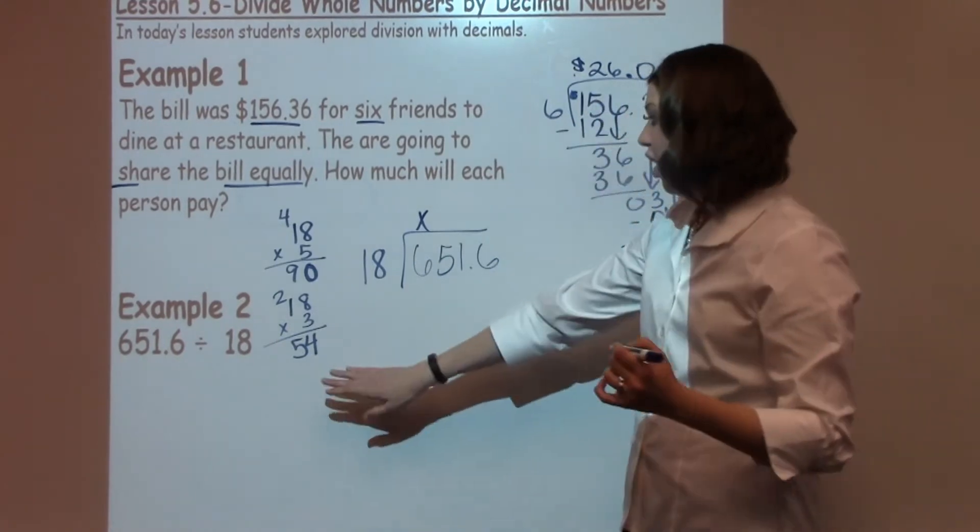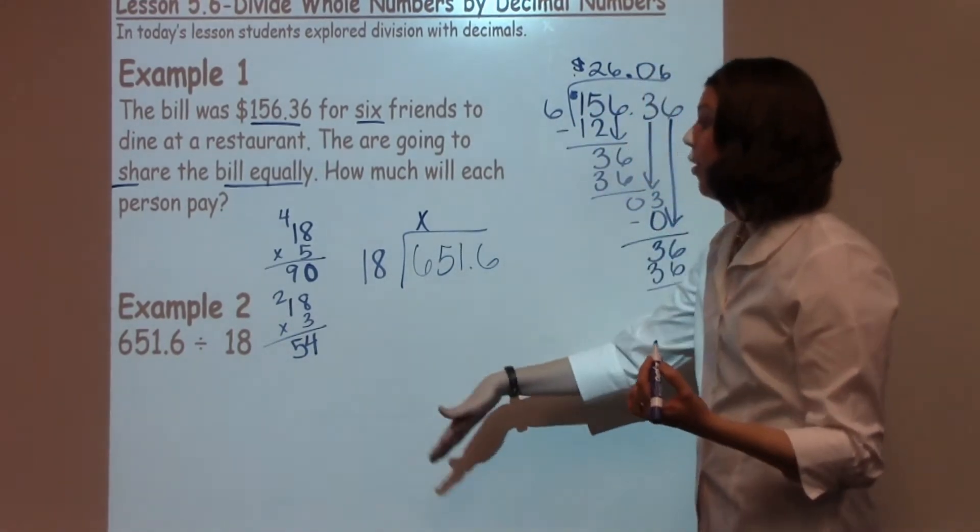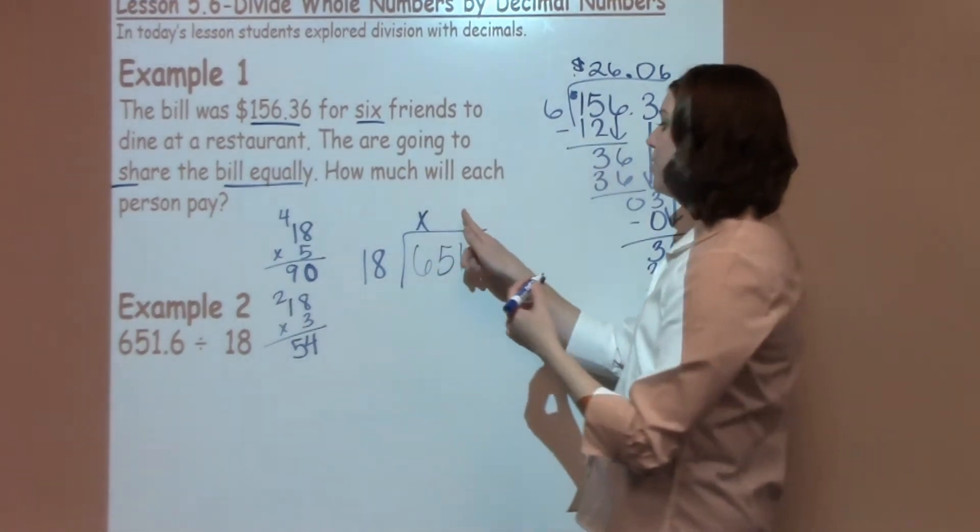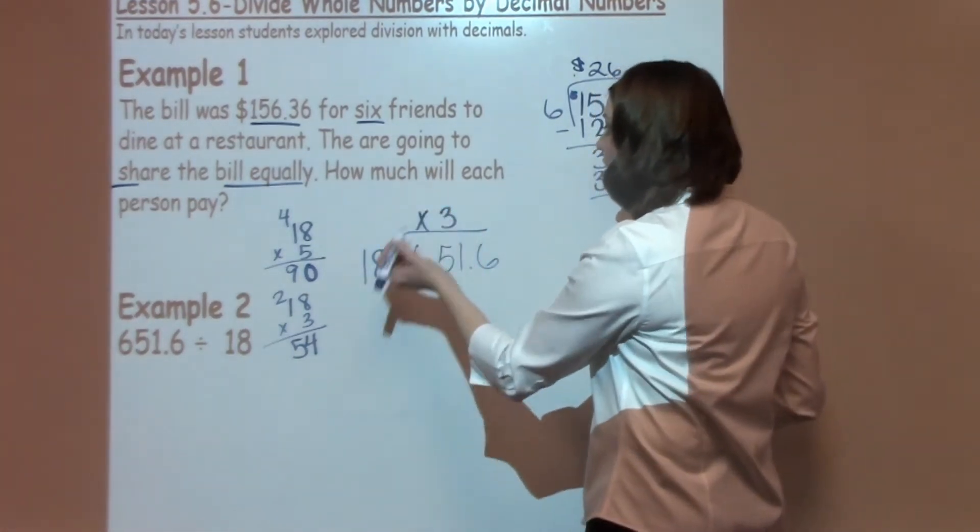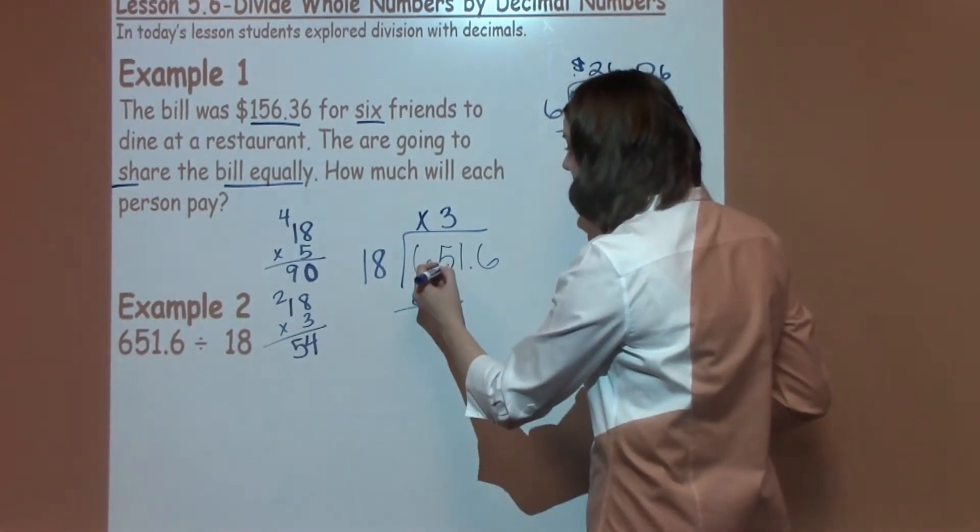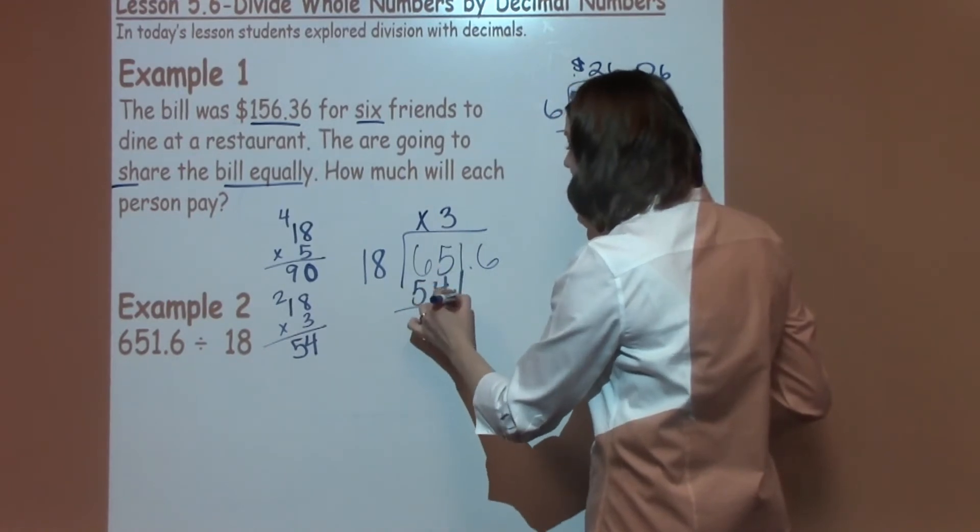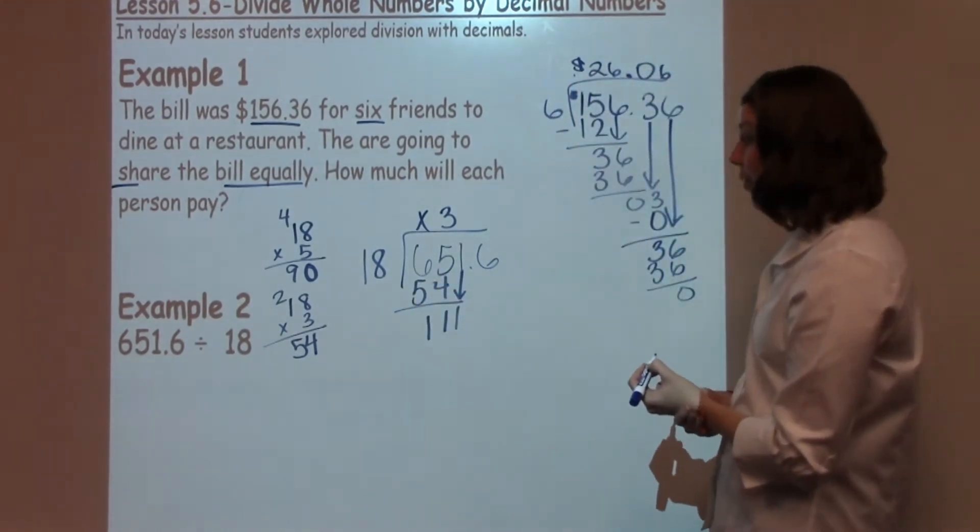That seems like my best option right now. If I add another eighteen to it, I know I'm going to go above my sixty-five mark, which would be too much, so I'm going to use three. Three times eighteen is fifty-four. When I subtract that, I have five minus four, which is one, six minus five, which is one, and bring down my next number, which is also a one.